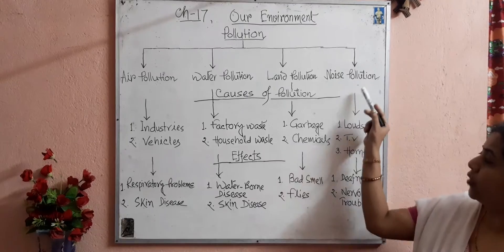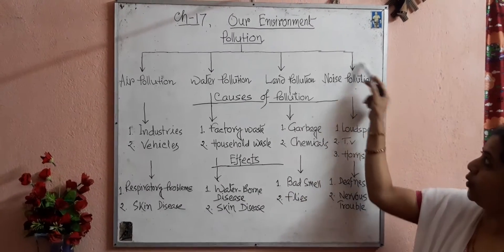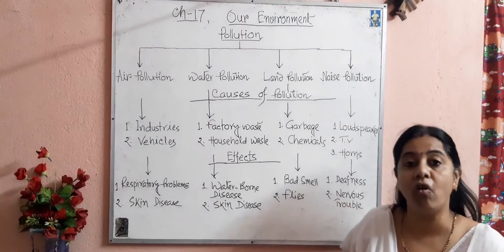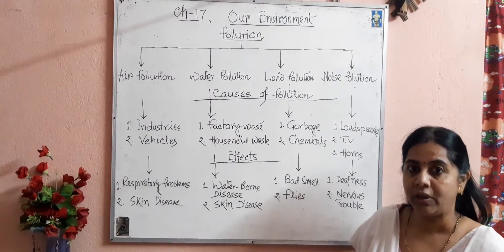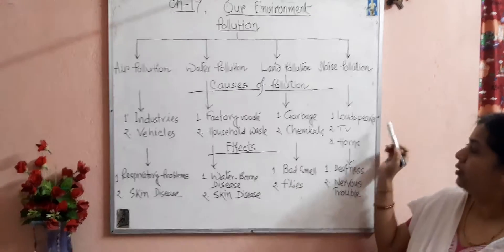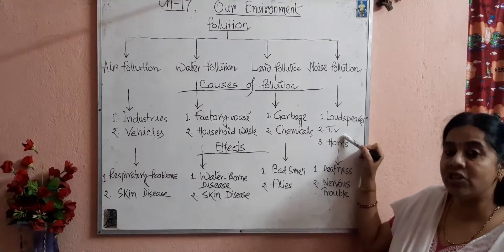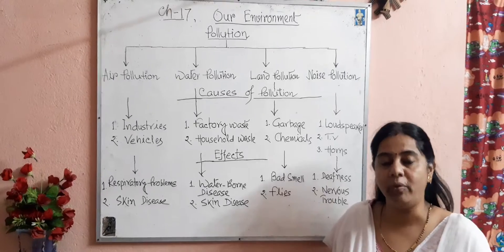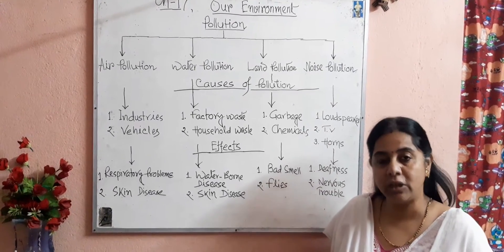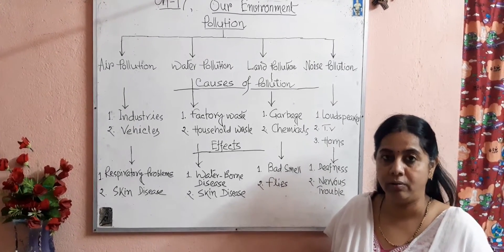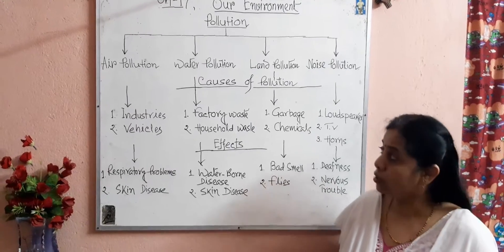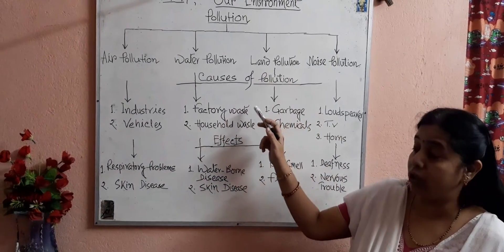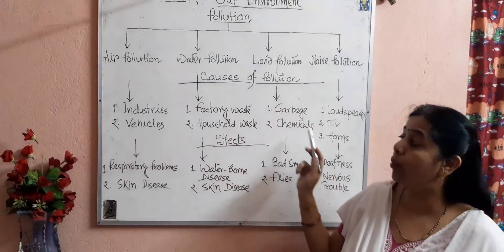The causes of noise pollution include the honking of horns of vehicles, and loudspeakers and TVs running at high volume in public places, which lead to noise pollution. So, industries, vehicles, factory waste, household waste, garbage, chemicals, fertilizers and pesticides, honking of horns, loudspeakers, and TV at high volume — these are all causes of different types of pollution.